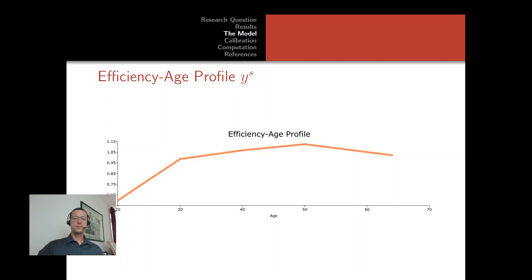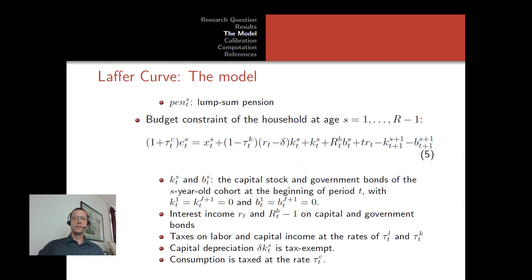As the United States ages, the number of older workers increases relative to younger workers. Since older workers are almost twice as productive as 20-year-olds, the average efficiency in the US workforce will go up as the country ages. This effect must be considered when studying tax revenues from more productive workers, or issues of public pension reform.